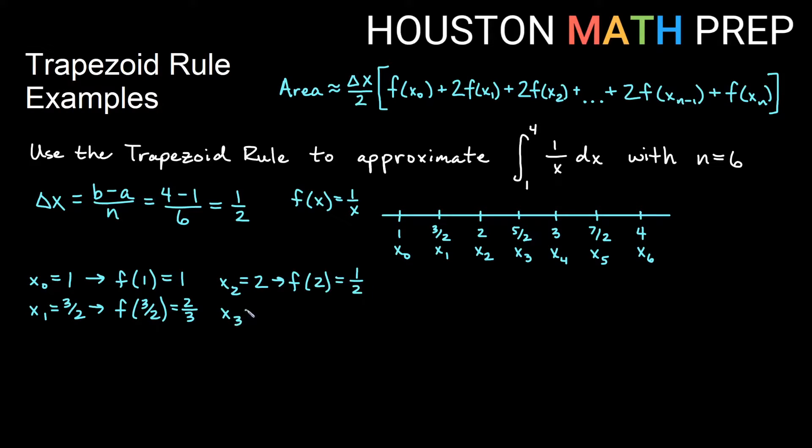My x₃ value is 5 halves. So if I plug that into my function, the reciprocal of 5 halves will be 2 over 5. x₄ is 3, and if I plug that into my function, f of 3 is 1 third. x₅ is 7 halves, and f of 7 halves is 2 over 7.